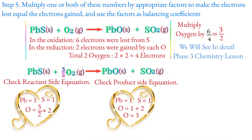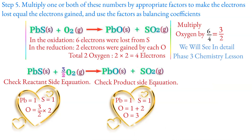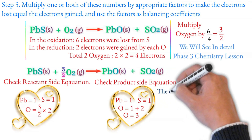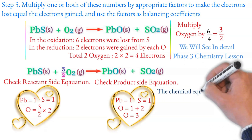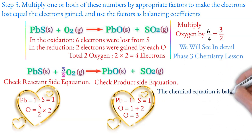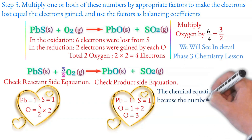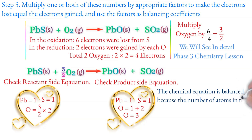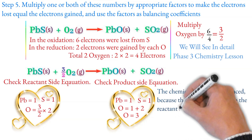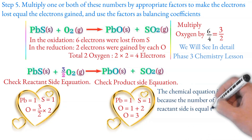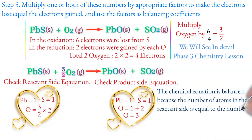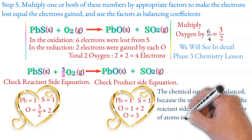The chemical equation is balanced because the number of atoms on the reactant side is equal to the number of atoms on the product side.